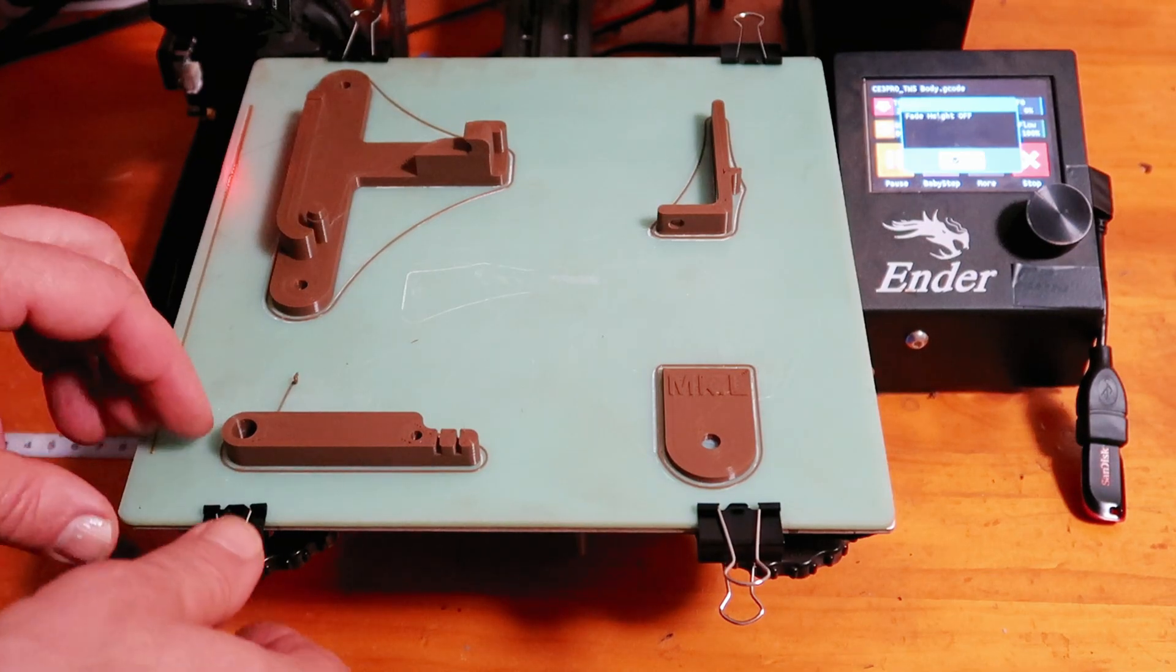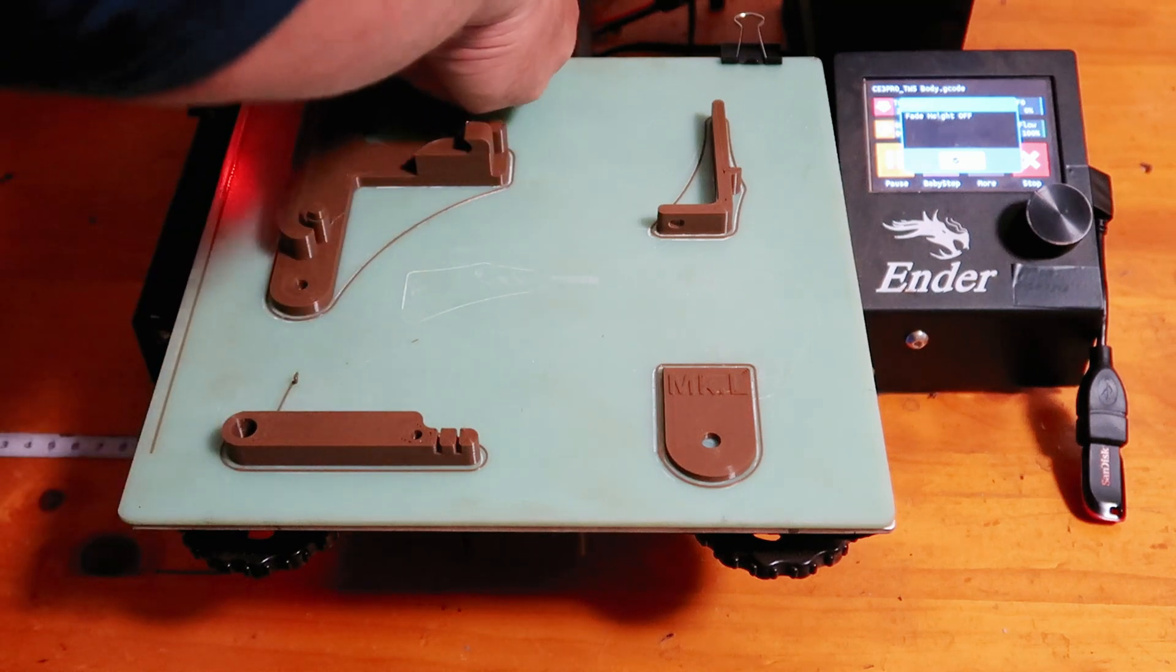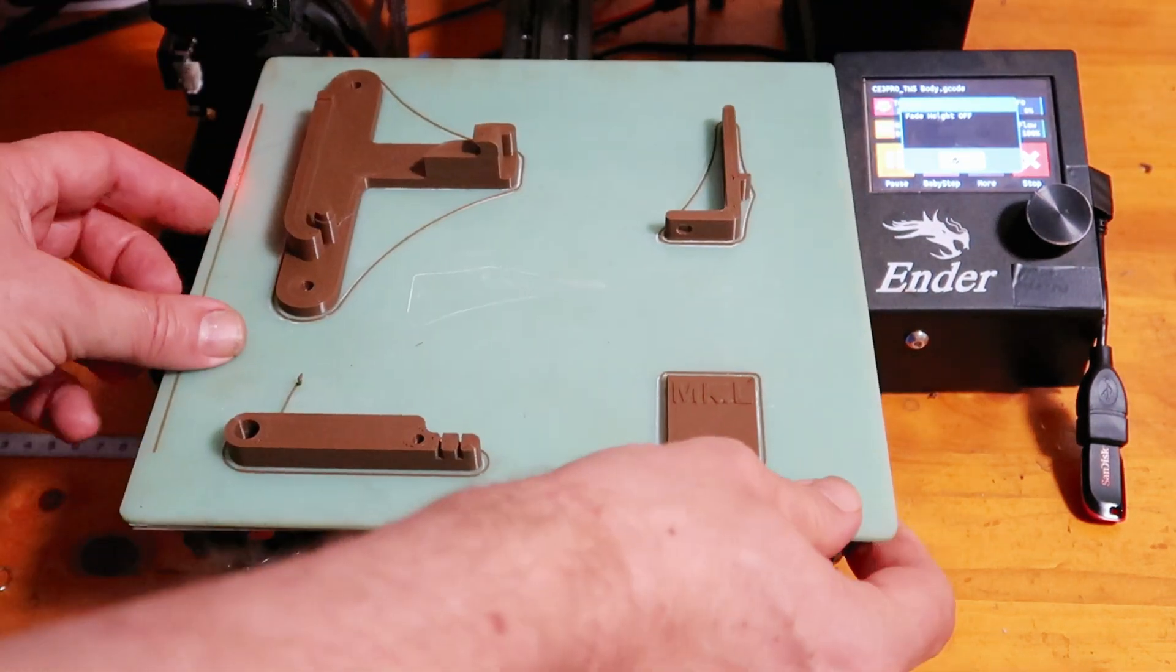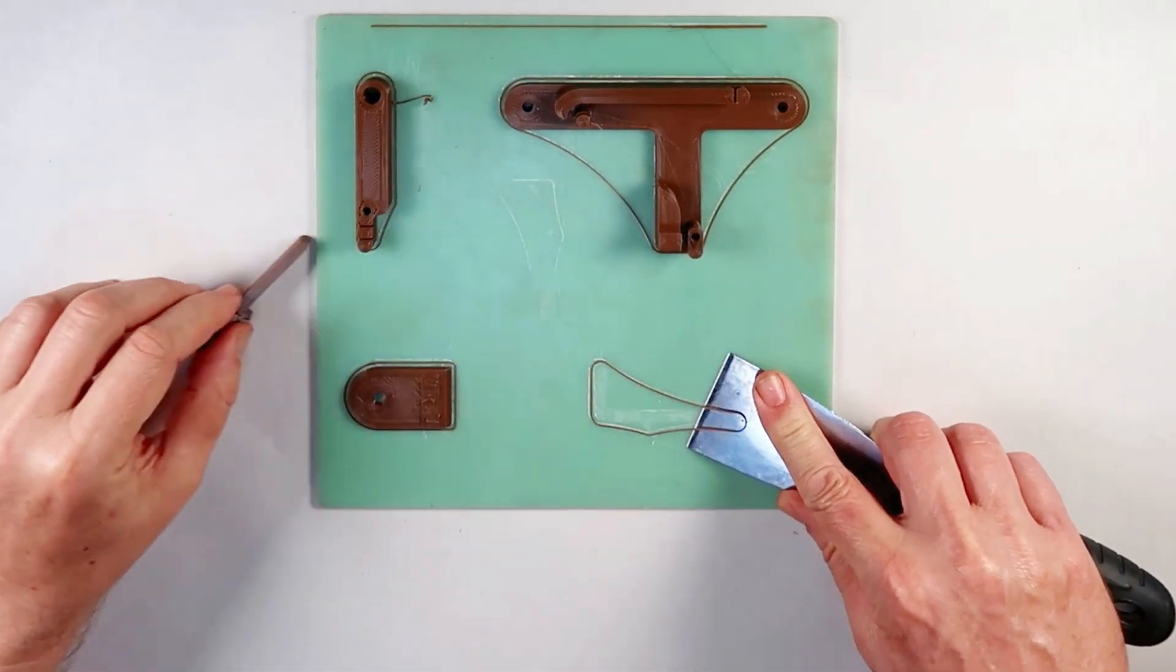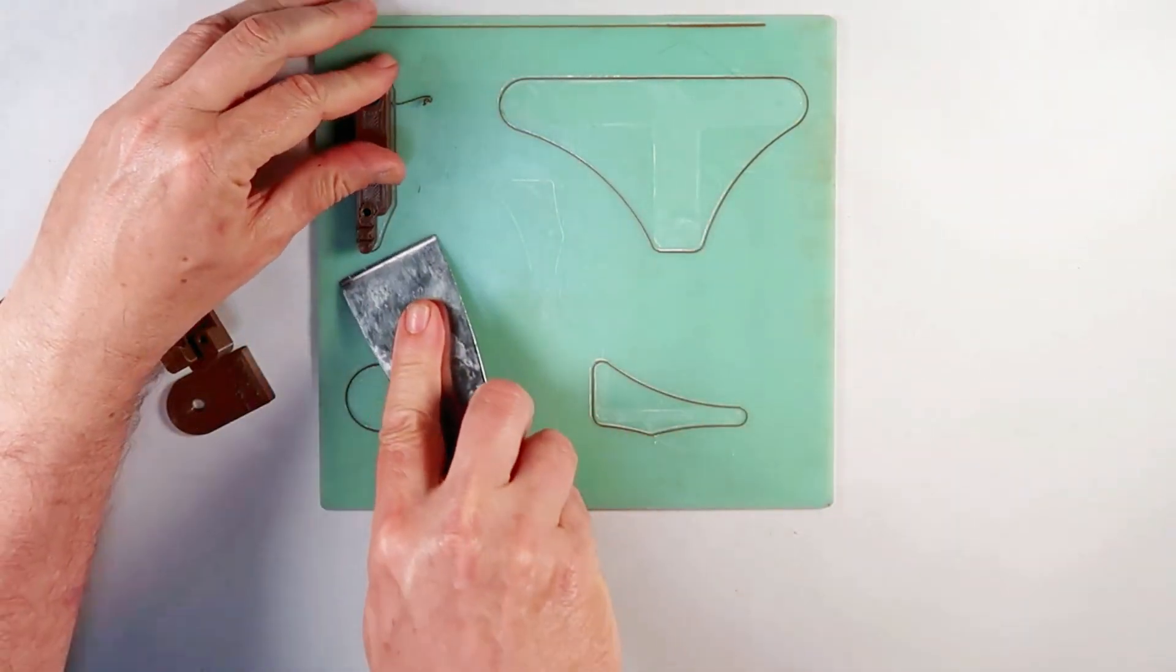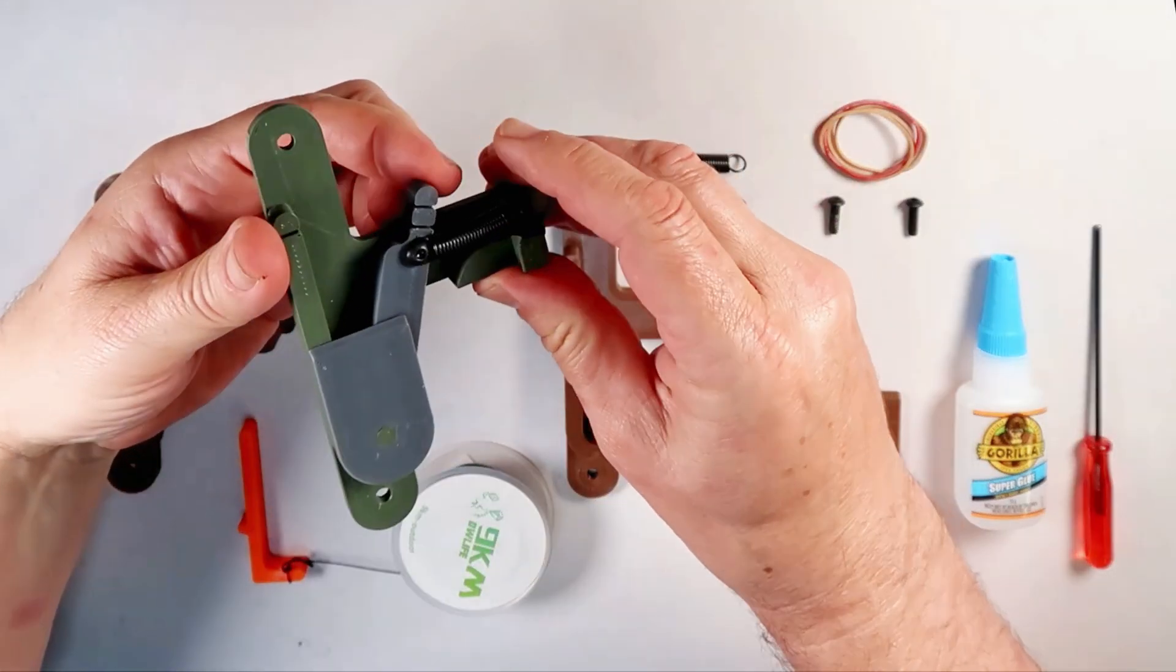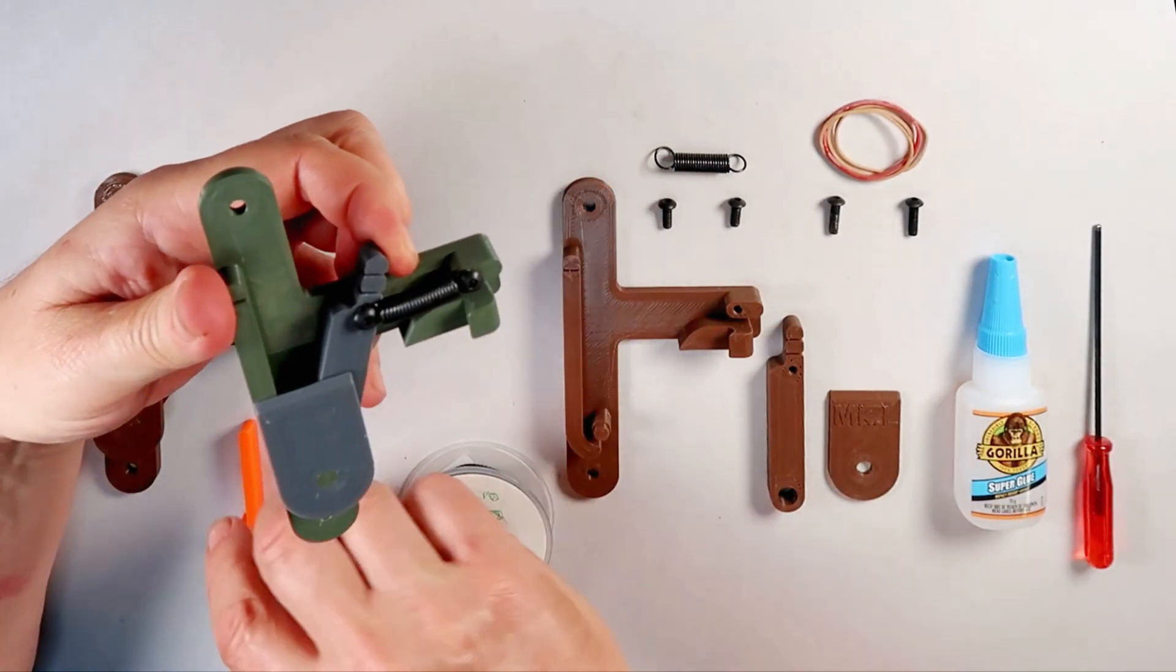Step 1. Print and assembly. All the parts print easily without the need for support. This one is printed in PLA+. The mechanism can be constructed using either a metal extension spring or rubber bands for tension.